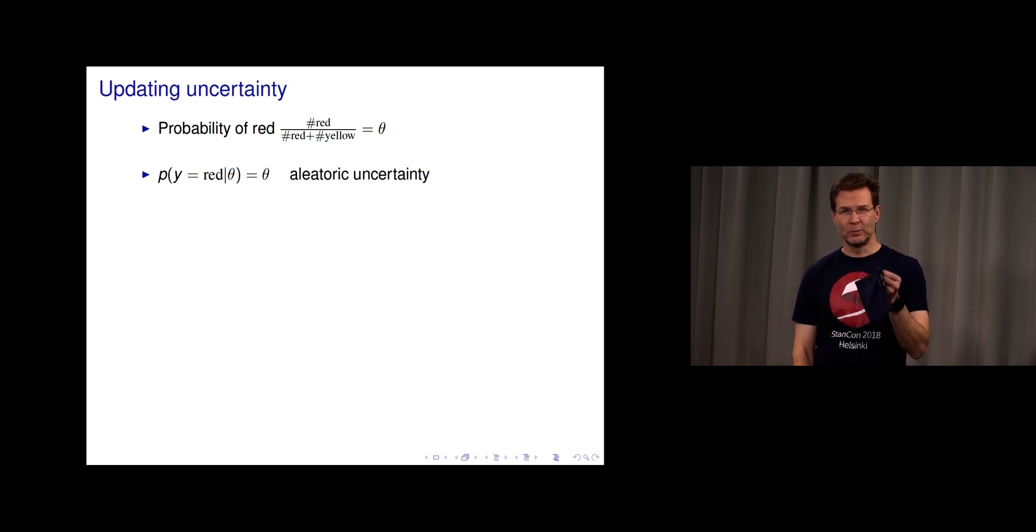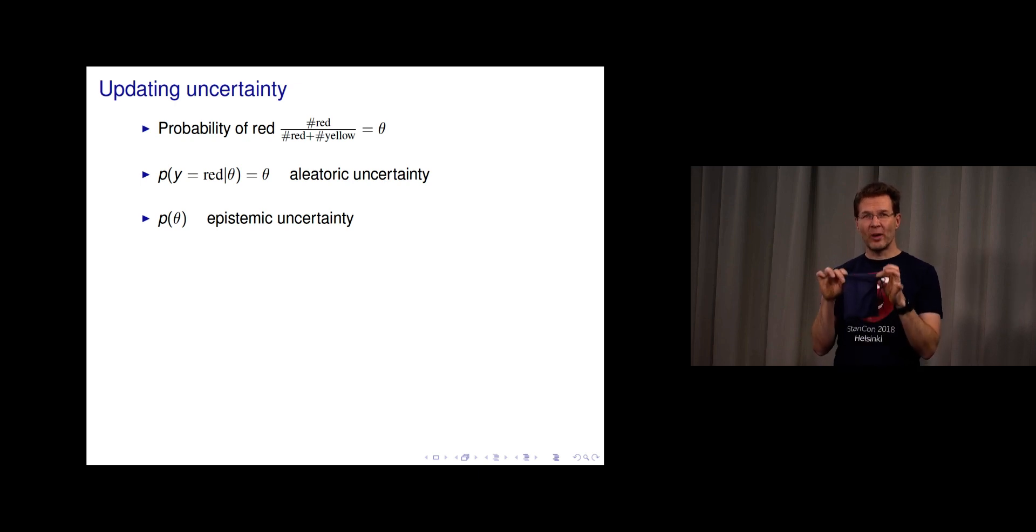But I did not tell you how many red and yellow ones there are, so we have epistemic uncertainty about theta. We can then use P of theta to denote the probability distribution for how likely we think different values of theta are.